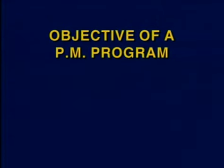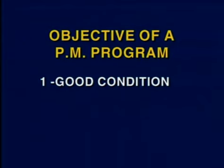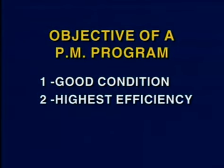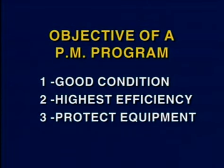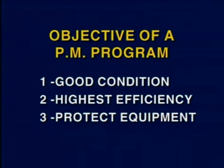A preventive maintenance program has many objectives. The first is to make sure that the equipment is kept in good condition to ensure uninterrupted operation for as long as possible. Second, to keep the equipment operating at the highest efficiency — for example, in a motor, by keeping its bearings lubricated so that there is not too much friction. Third, to protect the equipment from environmental hazards. And fourth, one of the most important objectives, which is often neglected, to keep good records and documentation of what has been done.